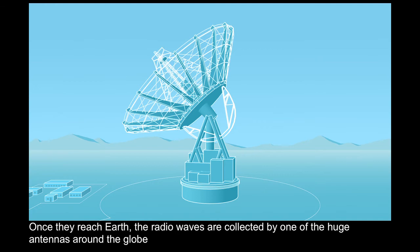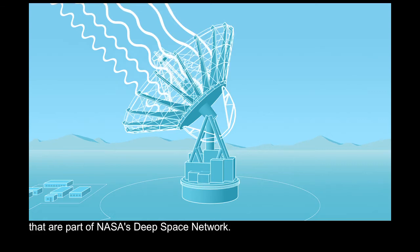Once they reach Earth, the radio waves are collected by one of the huge antennas around the globe that are part of NASA's Deep Space Network.